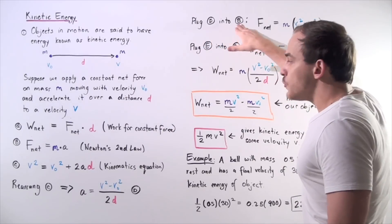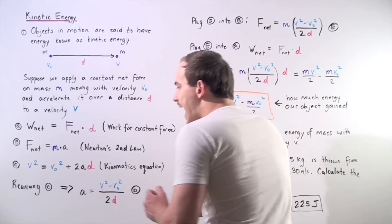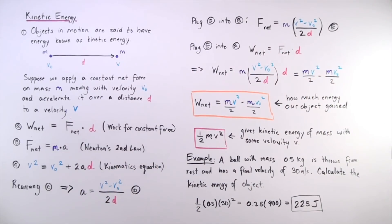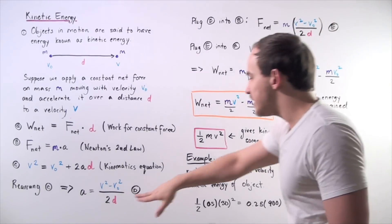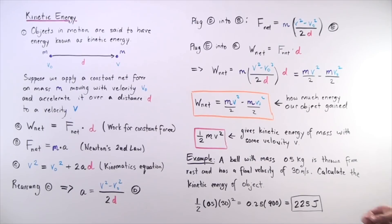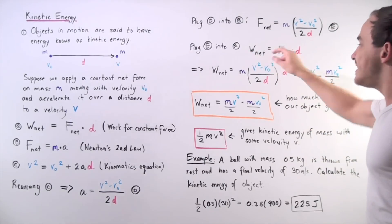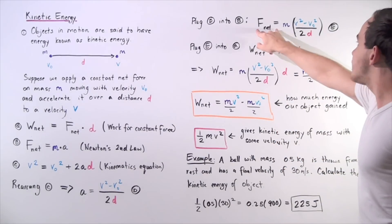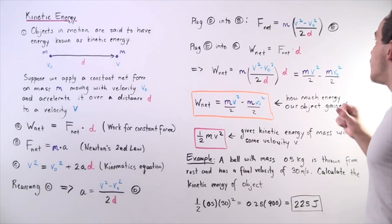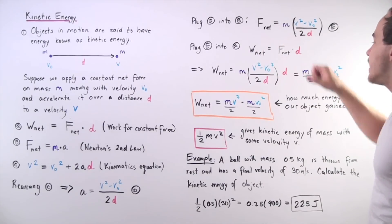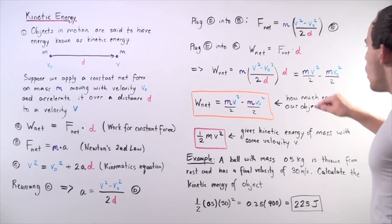Now let's plug equation D into equation B. In B, we have net force equals mass times constant acceleration. So the net force equals our mass times the acceleration from equation D — let's call this equation E. Finally, let's take E and plug it into A. The net work done on our object equals net force multiplied by displacement d. Taking this net force and substituting in, we get: net work equals mass times V-final squared minus V-initial squared divided by two times displacement, multiplied by displacement. Notice the displacements cancel.